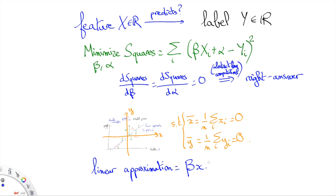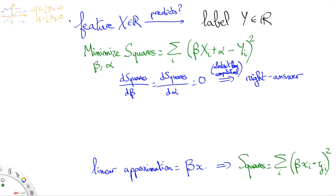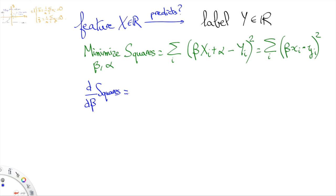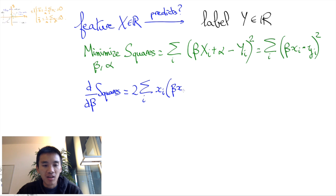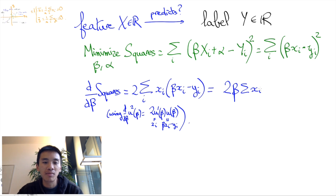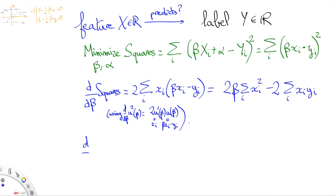Therefore, the sum of squares is now sum of (beta x_i minus y_i) squared, which is much simpler to write. When we take the derivative with respect to beta, we obtain 2 times the sum of the x_i times (beta x_i minus y_i), which is equal to 2 times beta times the sum of the x_i squared minus 2 times the sum of the x_i y_i.